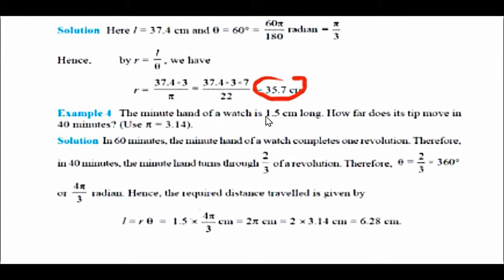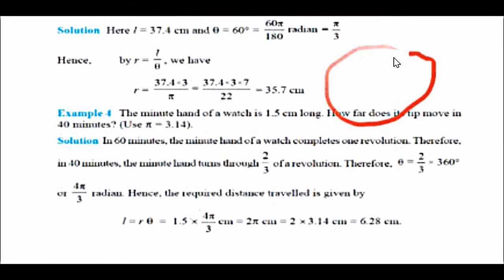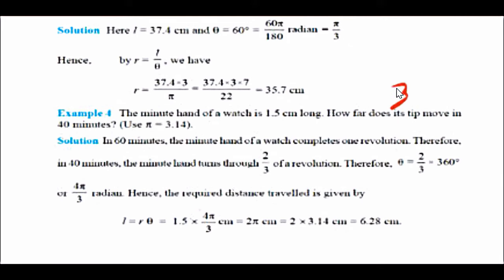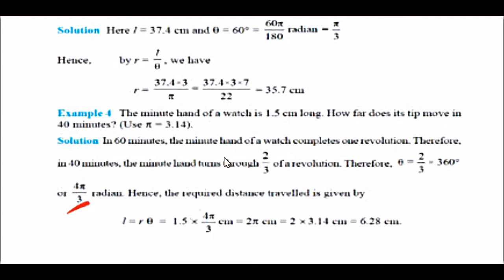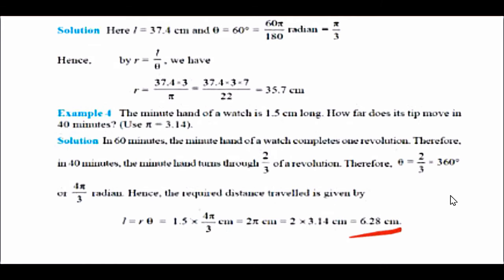Next: the minute hand of a watch is 1.5 cm long — this is the radius. How far does the tip move in 40 minutes? Treating the clock face as a circle, 360 degrees takes 60 minutes, so in 40 minutes the hand covers 2/3 of a revolution. The angle θ = (2/3) × 360° = 240°, which equals 4π/3 radians. Using L = Rθ, L = 1.5 × (4π/3) = 6.28 cm.